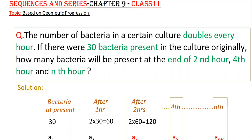Here the problem is: the number of bacteria in a certain culture doubles every hour. If there were 30 bacteria present in the culture originally, how many bacteria will be present at the end of second hour, fourth hour and nth hour?